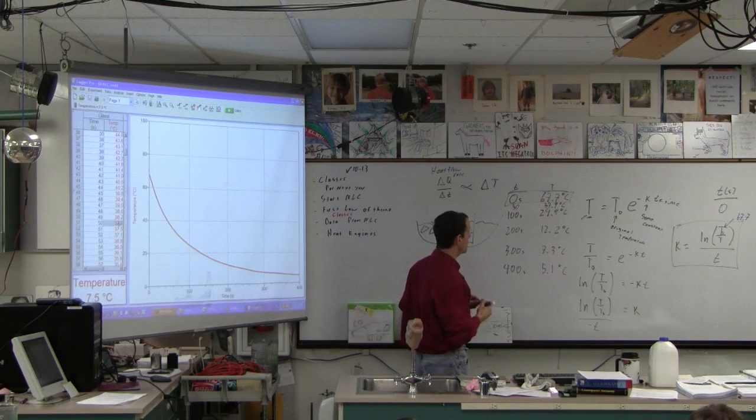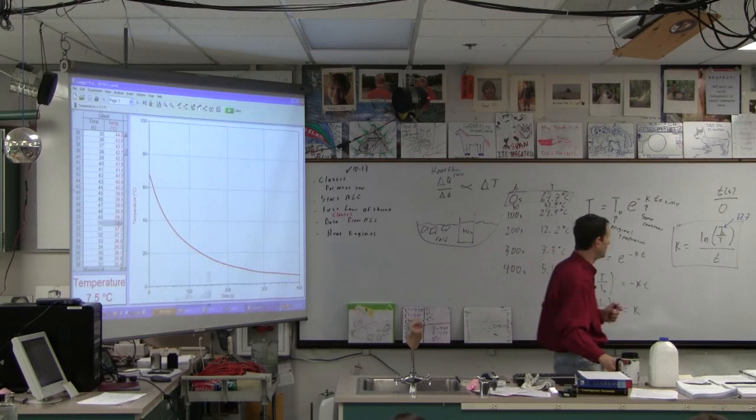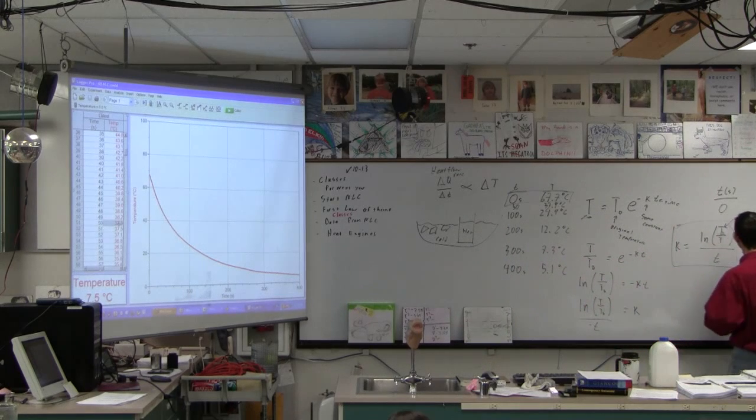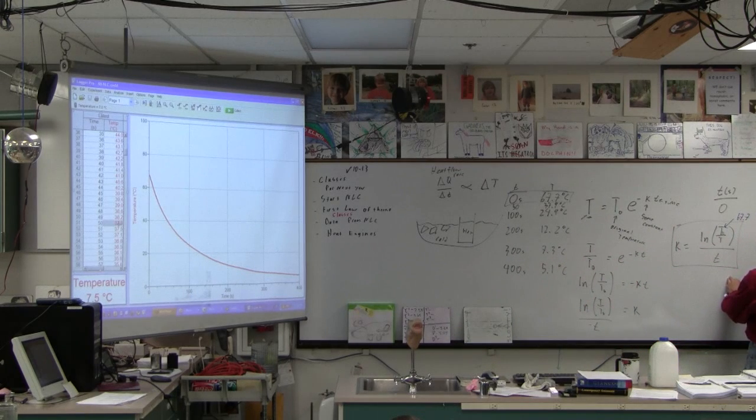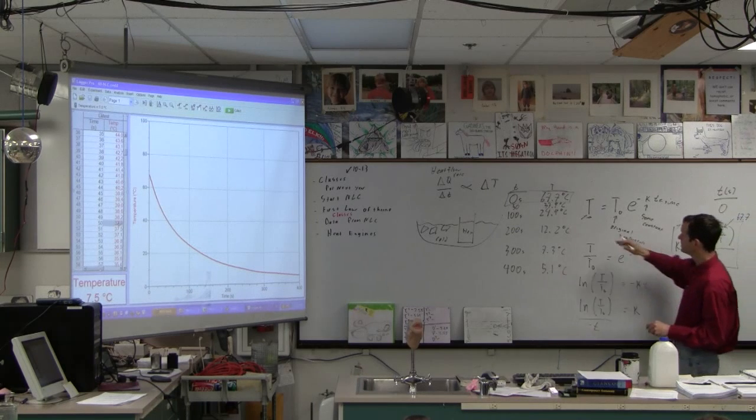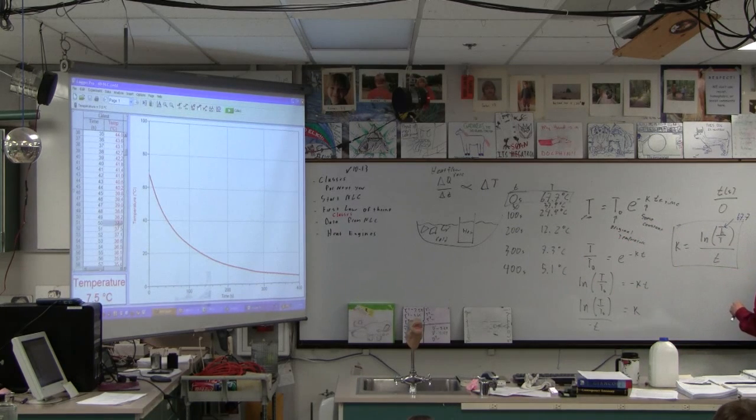And now you can go ahead and calculate K a bunch of times. I'll show you the K for a hundred seconds. It's going to be K is going to be the natural log of 67.7 divided by, and at a hundred seconds it was 24.9, divided by, and then it was a hundred seconds.